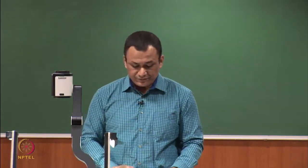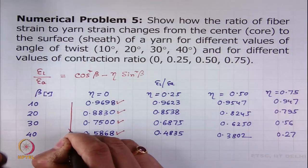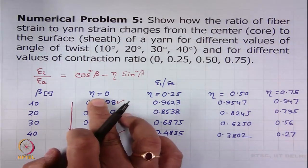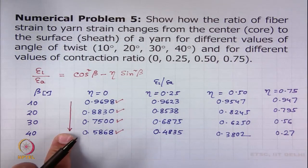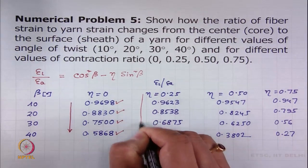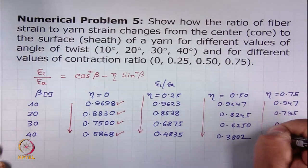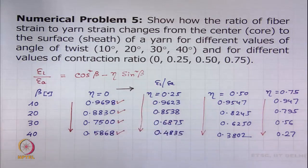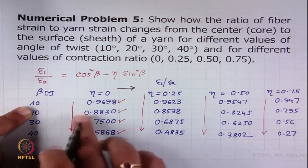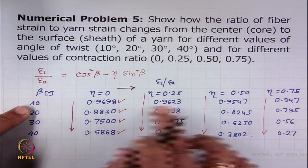If we carefully observe this table and go along this direction, for a given contraction ratio when the twist angle increases, the ratio of fibre strain to yarn strain decreases. The same trend is observed here also and here also. Similarly, for a given twist angle when the contraction ratio increases, the ratio of fibre strain to yarn strain decreases.